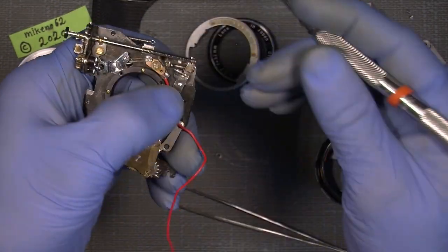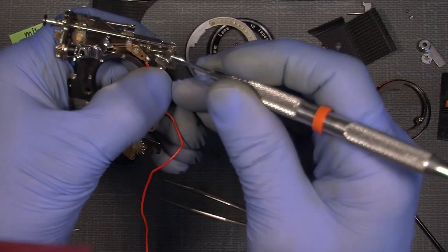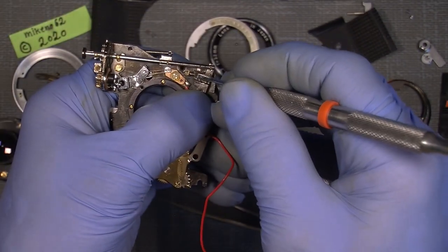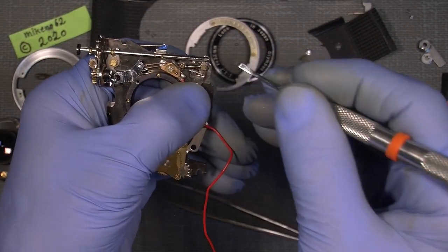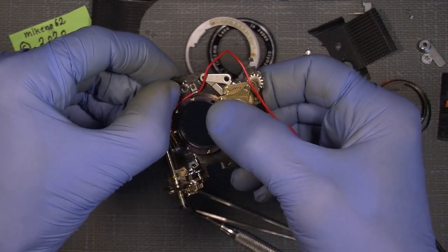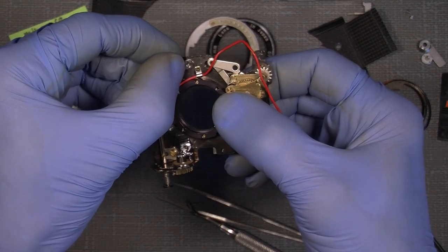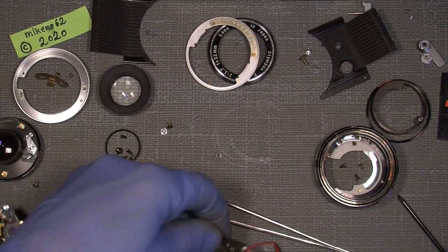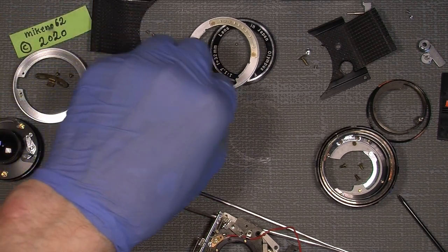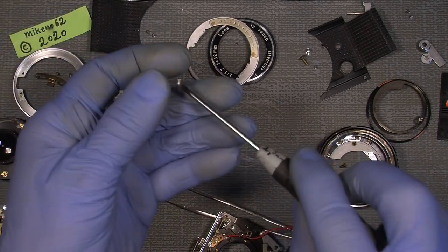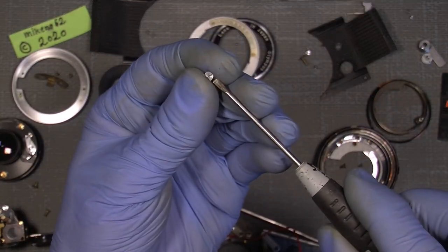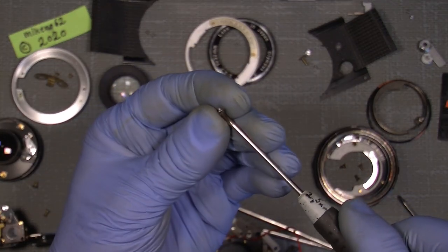And here we go, so I simply put the dentist tool in here and lift it up to where it should be without damaging the spring. So now I can easily put this lever down here and put in this special screw. Where is my screw drawer here? And put in this special screw with a big head. So there.